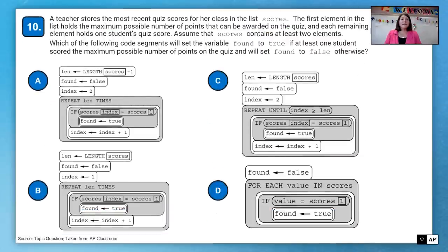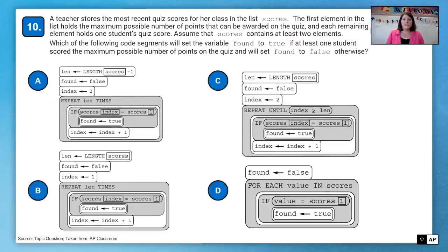All right, two questions to go. A teacher stores the most recent quiz scores for her class in the list scores. The first element in the list holds the maximum possible number of points that can be awarded on the quiz. And each remaining element holds one student's quiz score. Assume that scores contains at least two elements. Which of the following code segments will set the variable found to true if at least one student scored the maximum possible number of points on the quiz and will set found to false otherwise? So again, that first value is the max. Did any student score the maximum if possible? So that's what we're looking for here.